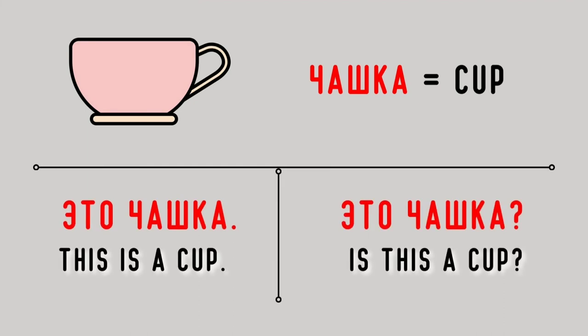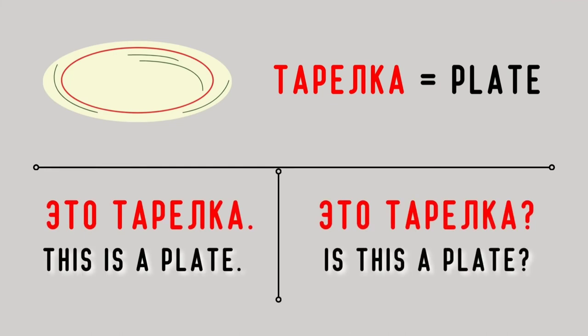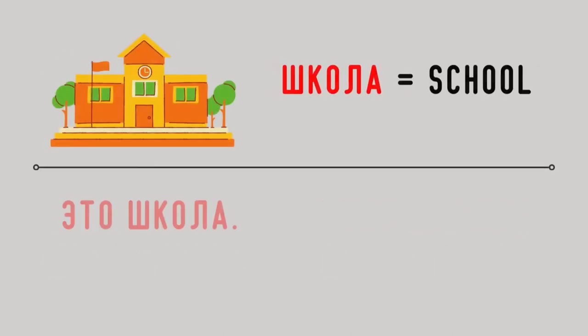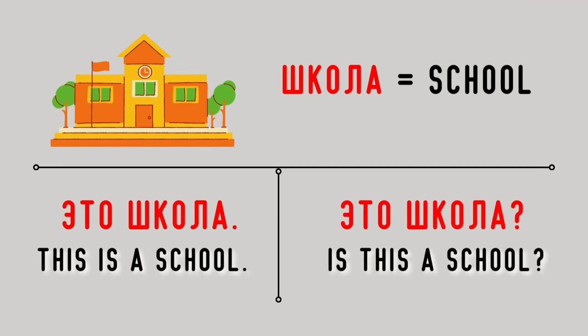Чашка — cup. Это чашка. This is a cup. Это чашка? Is this a cup? Тарелка — plate. Это тарелка. This is a plate. Это тарелка? Школа — school. Это школа. This is a school. Это школа? Is this a school? Это школа?